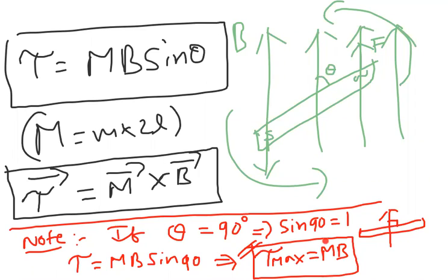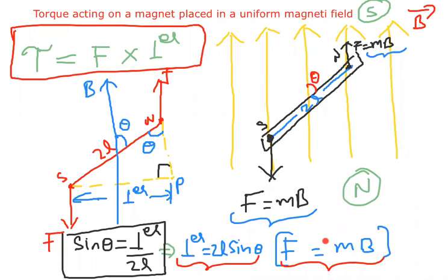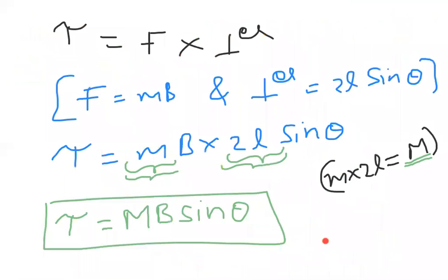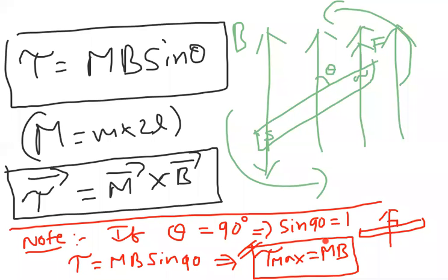This concludes our discussion. I showed you the diagram, the torque formula derived as tau equals MB sin theta, the vector form tau-bar equals M-bar cross B-bar, and the maximum torque condition. This is the complete discussion of torque acting on a magnet placed in a uniform magnetic field.